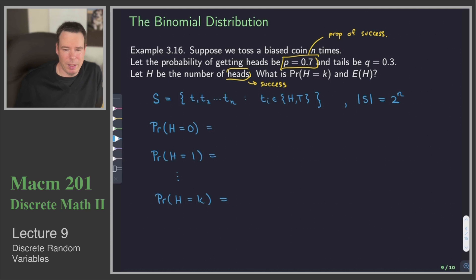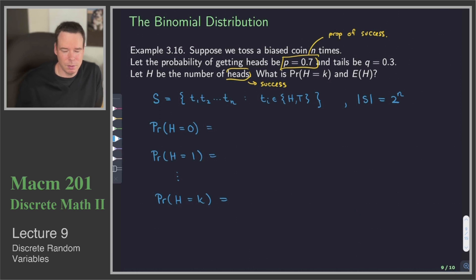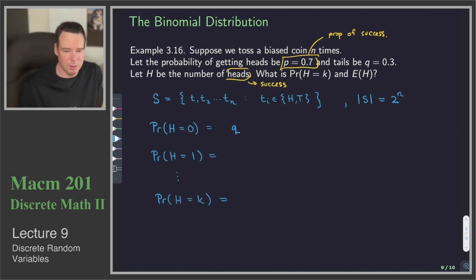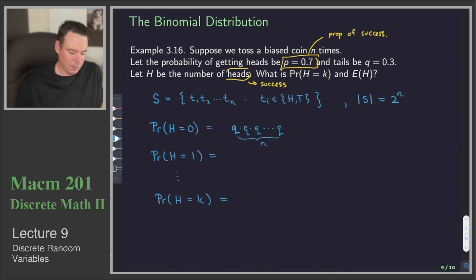So we want to know what the probability of getting 0 heads is. To get 0 heads means we need to get all tails. Because the flips are independent of each other, we think about it one flip at a time. Getting 0 heads means the first flip you got a tail — probability q. The probability of getting tails on the second flip is q again, third flip q again. We are multiplying q for each of the n flips, so the probability is q to the n.